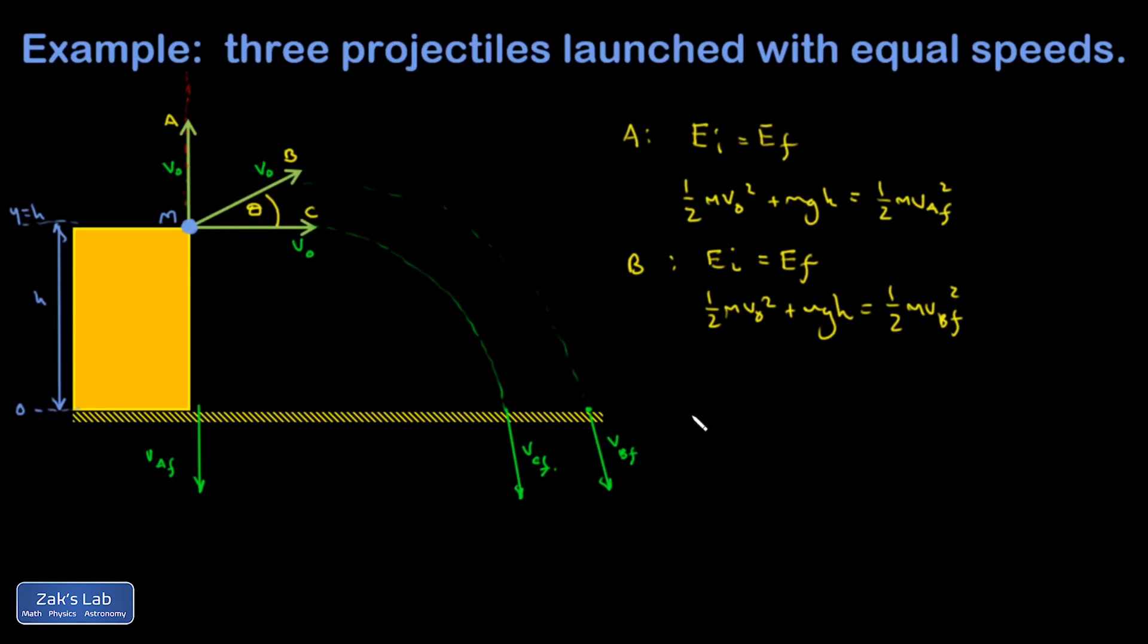Now, just to add a little bit of bonus material, I could take one of these and solve for the impact speed and get exactly the same expression for all three projectiles. So let's just do that just to be thorough. I had canceled the M's, multiplied both sides by 2, and I get V naught squared plus 2GH is equal to VB final squared.